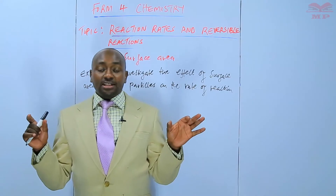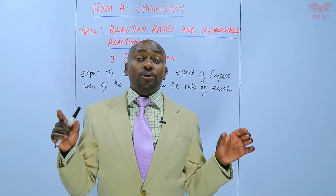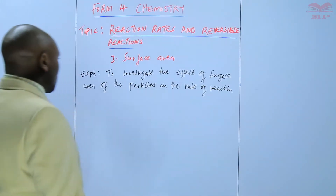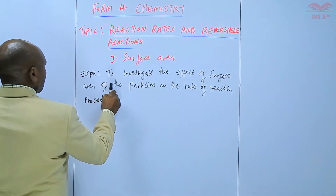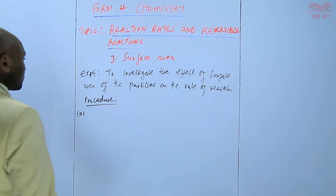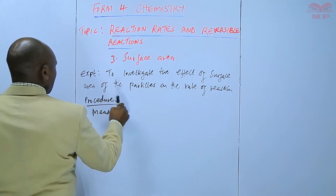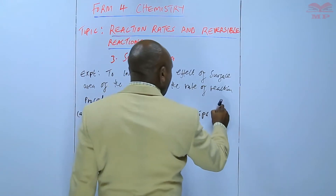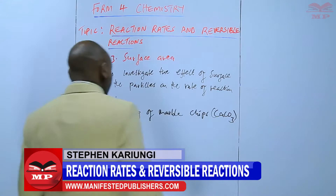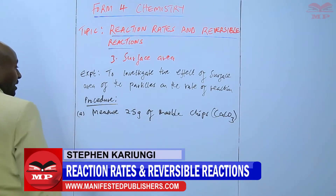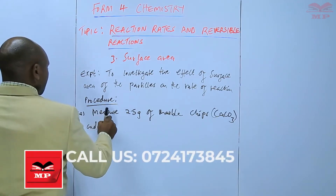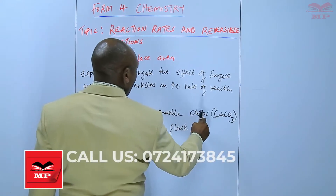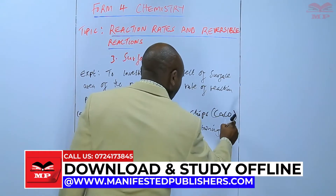We shall react the two with equal volumes of dilute hydrochloric acid and then observe the experiment. The procedure: measure 2.5 grams of marble chips — marble chips is calcium carbonate — and transfer it into a flask containing 50 cubic centimeters of 1 molar HCl, hydrochloric acid.